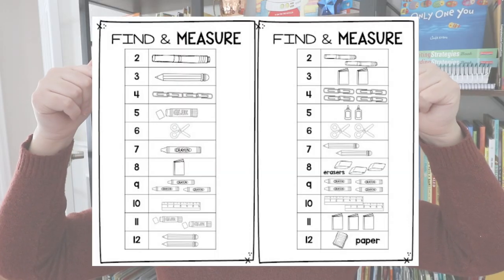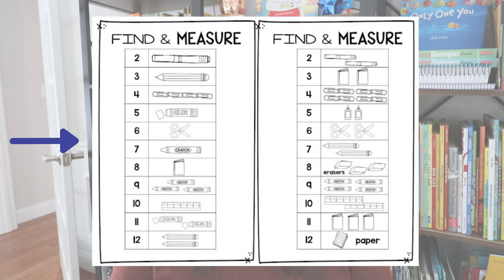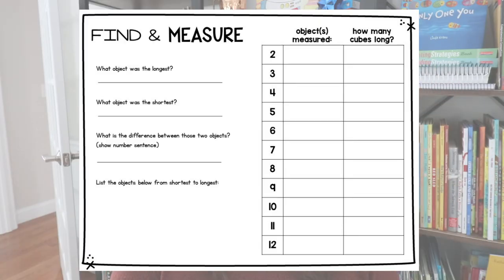Another fun measuring activity from my print and play measurement unit is Find and Measure. Students roll two dice and find the sum, then gather the corresponding school supplies — for example, if they roll a nine, they gather three crayons, stack them together, and measure them; if they roll a five, they measure a glue stick. It comes with a recording sheet where students answer questions comparing and ordering the measurements they found. This works with both standard and non-standard measurement tools.